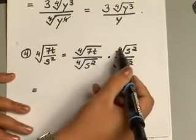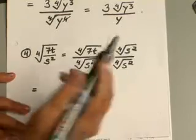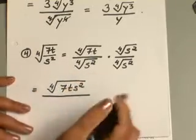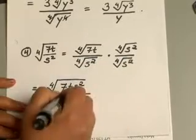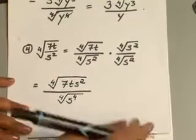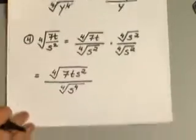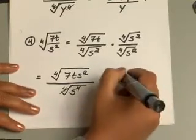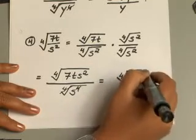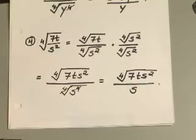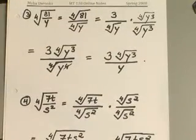Multiplying: both are fourth roots, so combine the radicands. 7t times s squared gives fourth root of 7ts squared in the numerator. In the denominator, s squared times s squared — that's 2 plus 2 — gives s to the fourth. The fourth power cancels out the fourth root, and your final answer is fourth root of 7ts squared over s. This gives you a good example of how to work with higher roots such as cube roots or fourth roots.